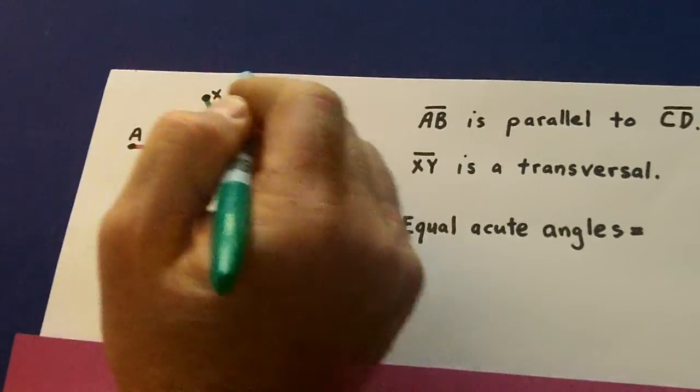So let's see what that looks like. So equal acute angles. Now, acute is less than 90 degrees. Less than 90: 1, 4, 5, 8. Now, can you see how those all would be the same number of degrees? They're all equal because the two red lines are parallel.